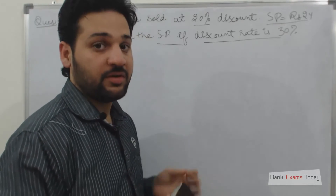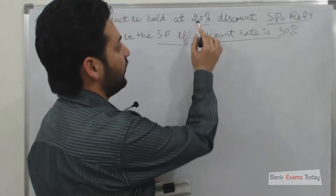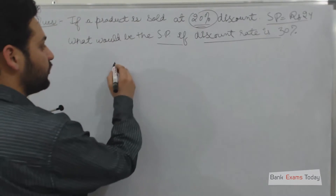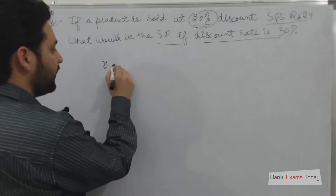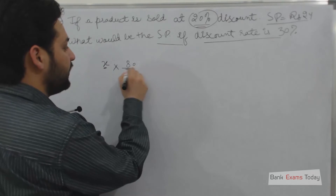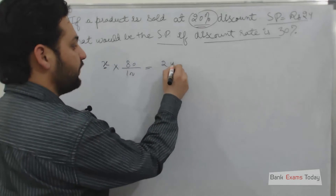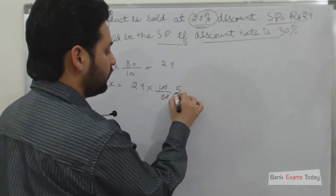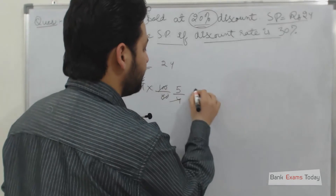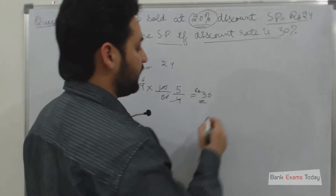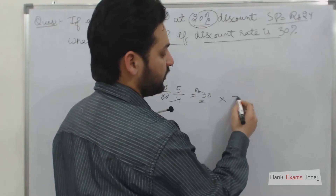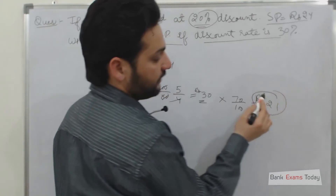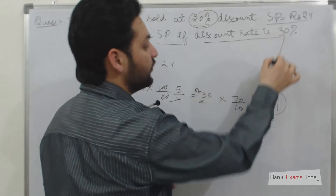There is a mark price or list price on which the retailer gives a discount, and after deducting the discount we get the selling price. If selling price is 24 and discount is 20%, then 80% of mark price = 24, so mark price = 24 × 100/80 = 30 rupees. If discount rate is 30%, the selling price will be 70% of the list price, which is 70% of 30 = 21 rupees.